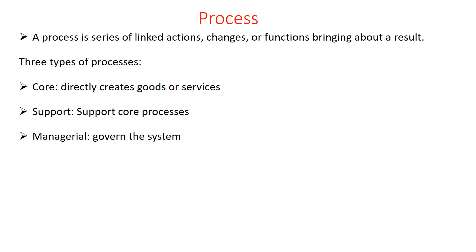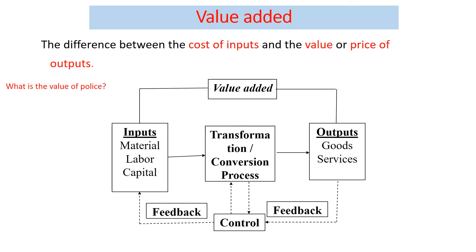This is the input-transformation-output process. The process is a series of linked actions, changes, or functions that bring about a result. There are three types of processes: core, support, and managerial. The important point is that the transformation process is controlled by the operation managers — they convert and control the conversion process from input to output. During this conversion process they add value: value added means the difference between the cost of inputs and the price of the outputs.